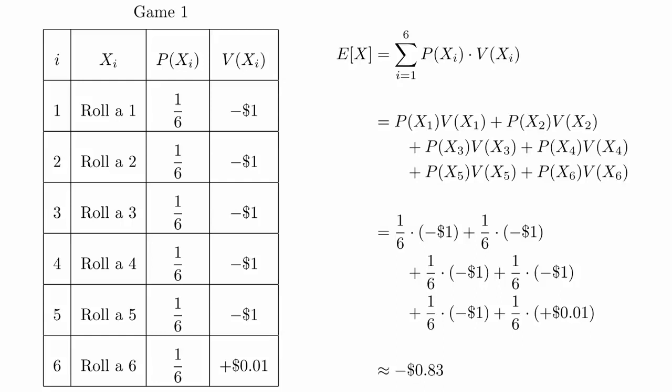If we calculate this value, we get about negative 83 cents. How do we interpret this number? It means that on average, you will lose 83 cents every time you play this game. It doesn't mean that you will definitely lose 83 cents every time you play the game. But if you play the game a lot of times, you will find that on average, the amount of money you lose each game is 83 cents.